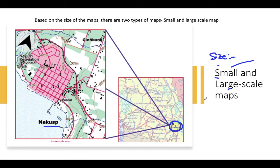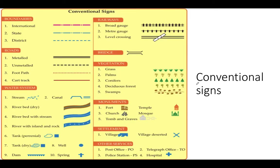A large scale map is one where you can get detailed information about cities — such as where the water bodies are, where the banks are, what the settlement type is, and details like where the park is. All such details are provided, so it is called a large scale map.